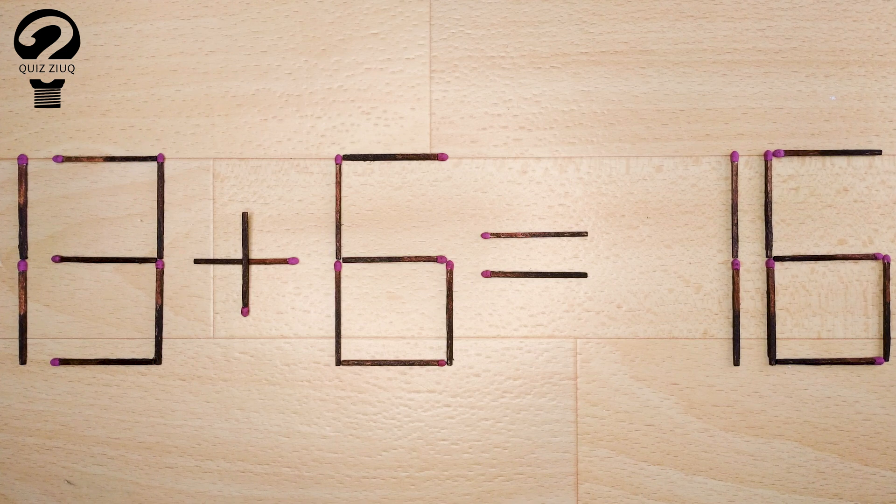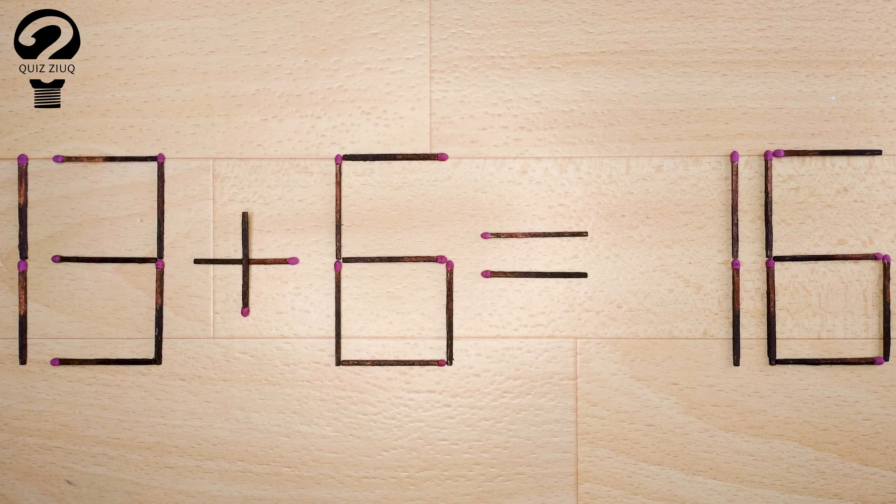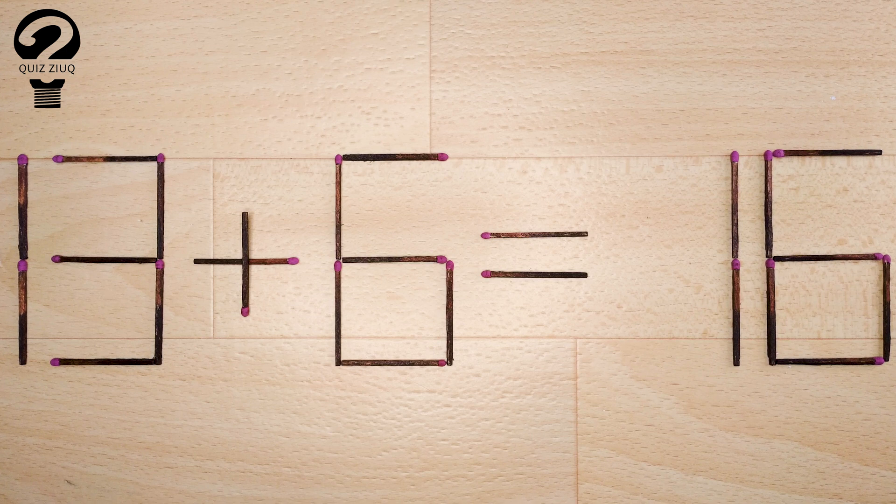Here's the next puzzle. We have the following equation: 13 plus 6 equals 16. Our equation is incorrect and we need to move one matchstick to make our equation correct.